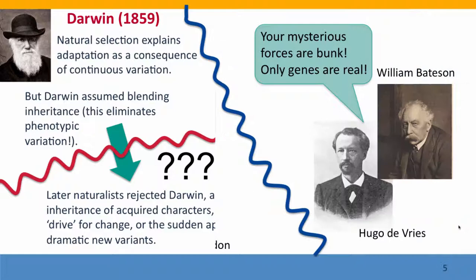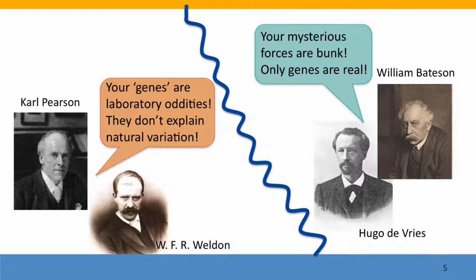The consequence was that there were now two schools of biologists. There were what were called the biometricians, because they measured — they studied continuous variation in natural populations. They said these genes that the fruit fly people work on are just weird laboratory phenomena; they have nothing to do with natural variation or with evolution. On the other hand, the geneticists scoffed at the biometricians because they were invoking mysterious, unscientific forces, whereas the geneticists had a clear explanation and understanding of the mechanism of heredity.